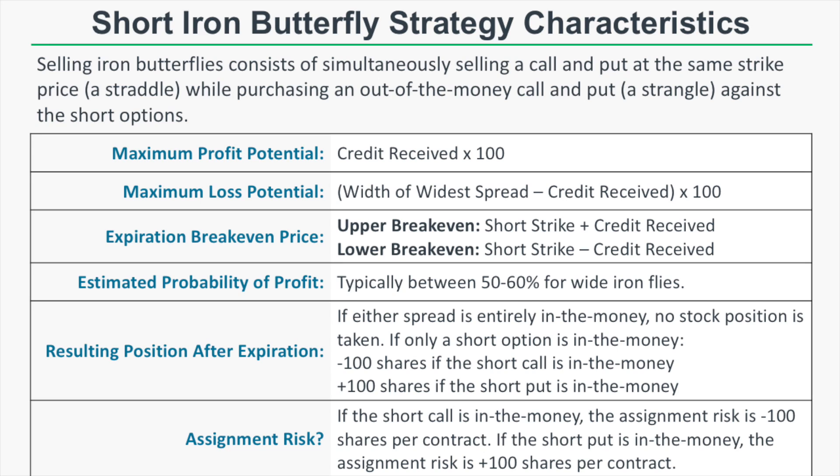Selling iron butterflies, or a short iron butterfly, consists of simultaneously selling a call and put at the same strike price — essentially a straddle — while also purchasing an out-of-the-money call and put, which is a strangle, against the short options. Another way to conceptualize this trade is by selling an at-the-money call spread and an at-the-money put spread. Typically the width of both spreads will be the same, giving you the same amount of risk on both sides.